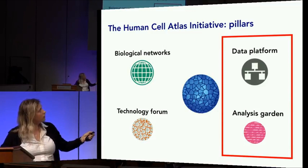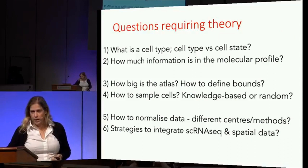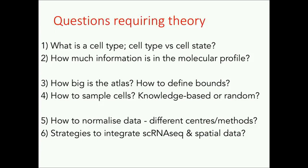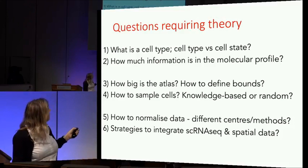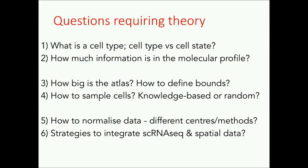What are the fundamental questions that require theory to address them? I've named six here that Donna and John have thought about, which we'll discuss during the breakouts. There's cell type and cell state, how much information is encoded in the molecular profile, how big is the atlas, how we're going to sample cells — knowledge-based or random or a combination — and how we normalize and integrate data from different centers and methods, which is really key for the atlas to add value as a global consortium.